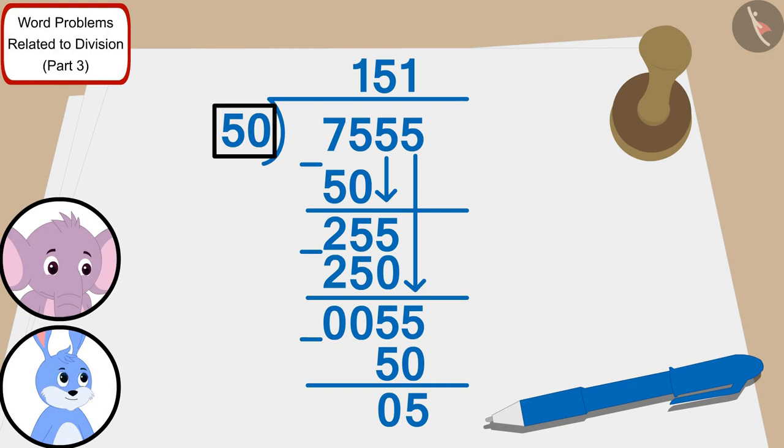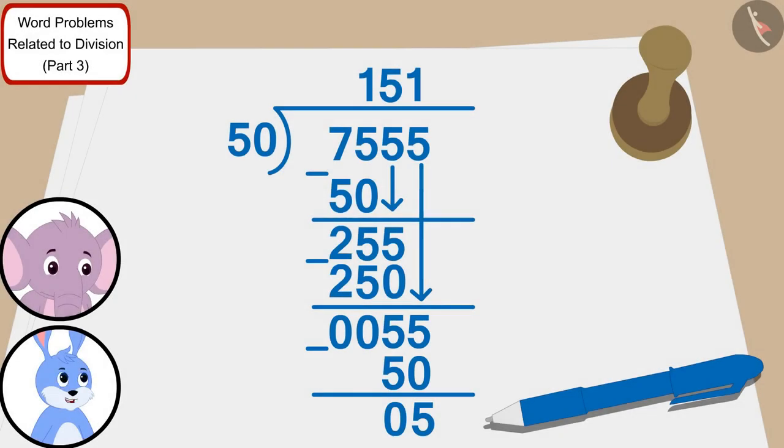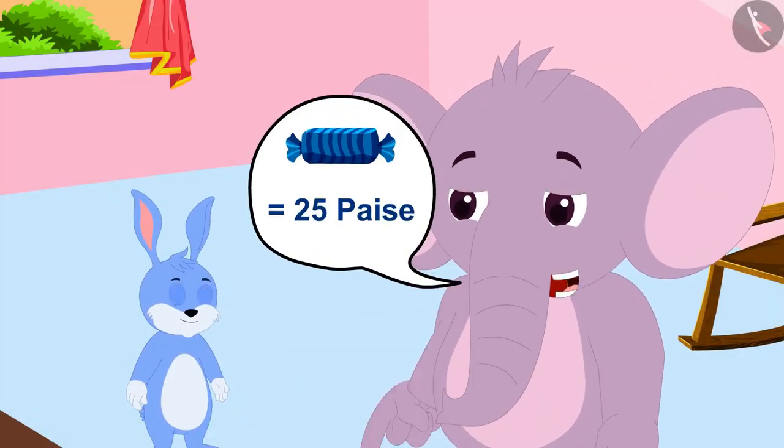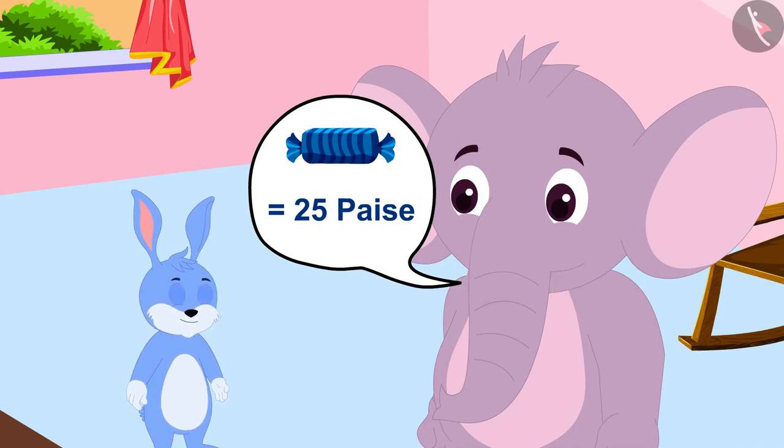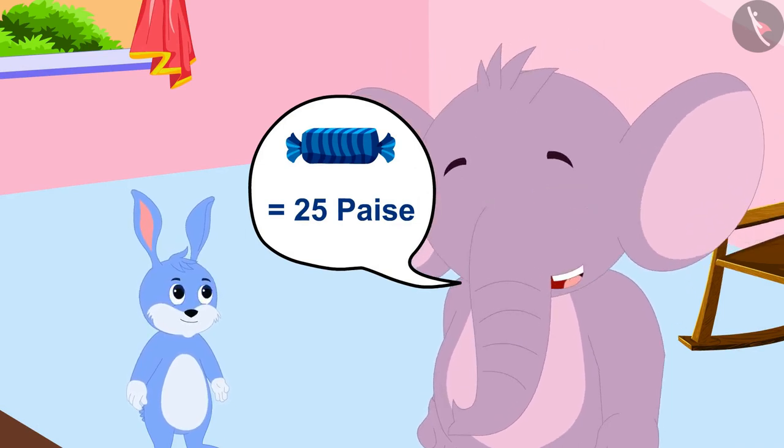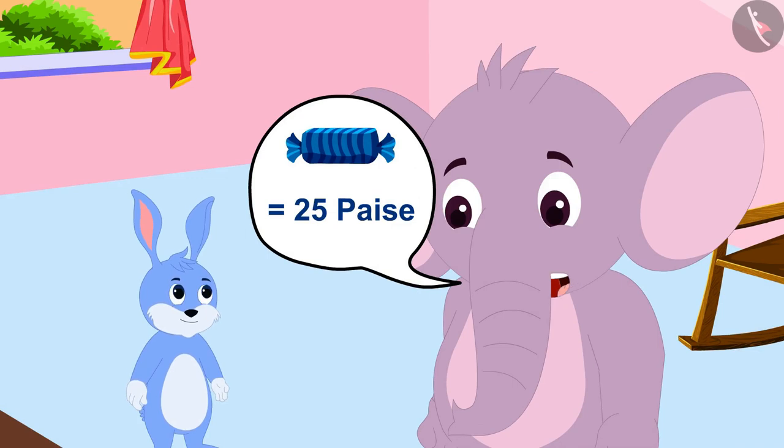But Appu, we still have five rupees left. We can buy toffees for young children with these five rupees, Bunny told Appu. Yes Bunny, a toffee is worth 25 paise, so now tell me how many children will we be able to give toffees to? Appu asked Bunny.